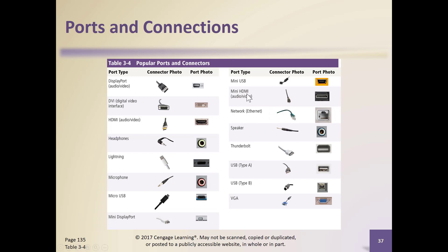Mini-USB, mini-HDMI — a lot of smartphones can be hooked up to our large-screen TV to broadcast a movie over that. Ethernet cable looks like a phone cable but it has eight wires in it. This portion of an Ethernet cable is called an RJ45 connector, whereas on phones you might be used to the RJ11.